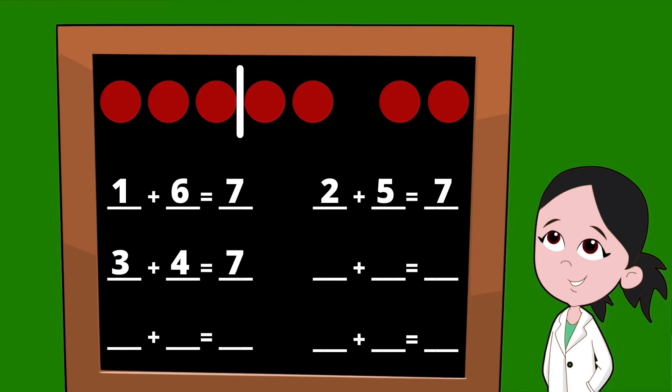Let's slide our line over one more dot to find our next set of partners. On the left side of our line, we have four dots, so we're going to start this partnership with the number four. On the right side of our line, we have three dots, so let's go ahead and fill in our other partner as the number three. Four plus three equals seven.